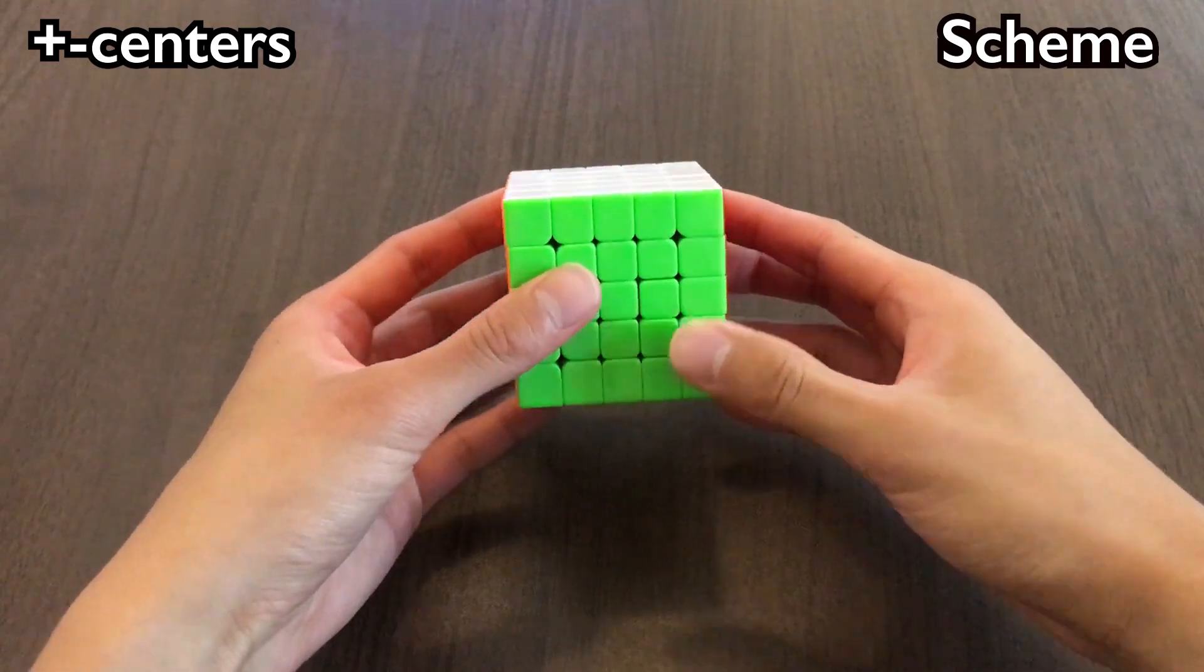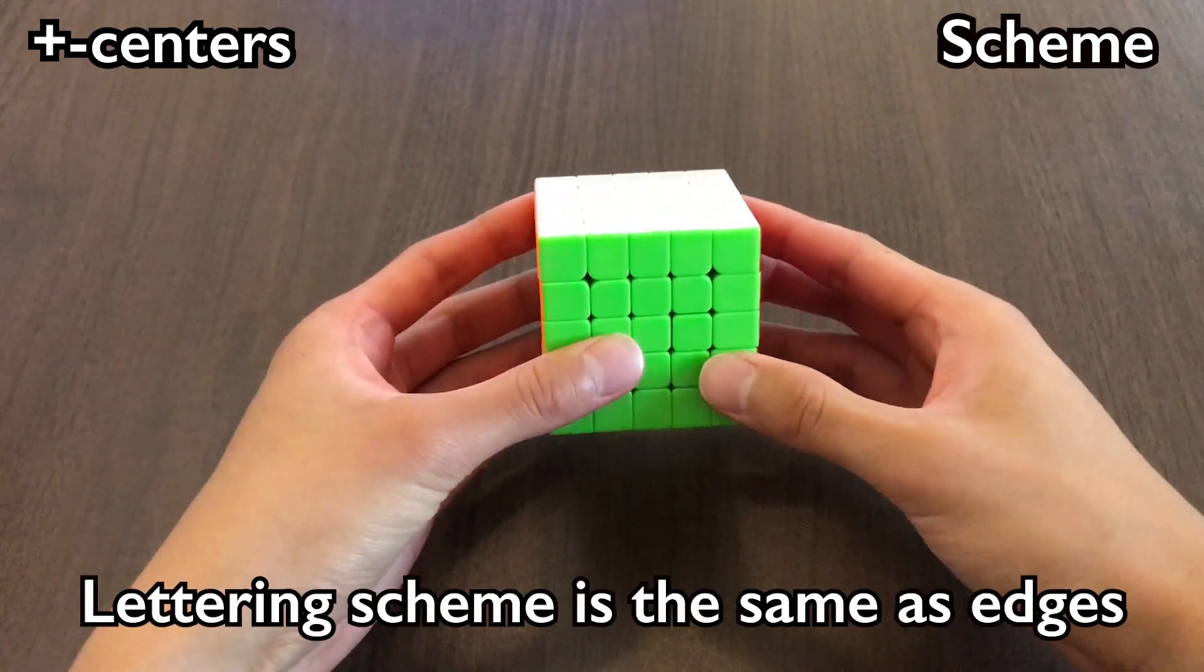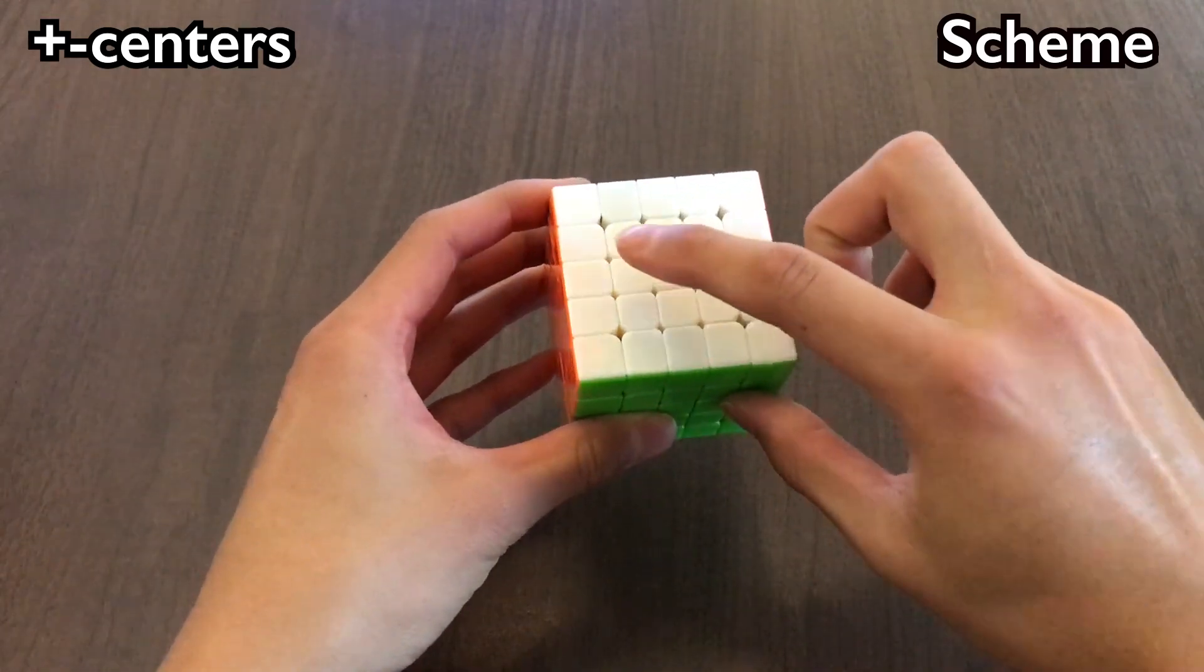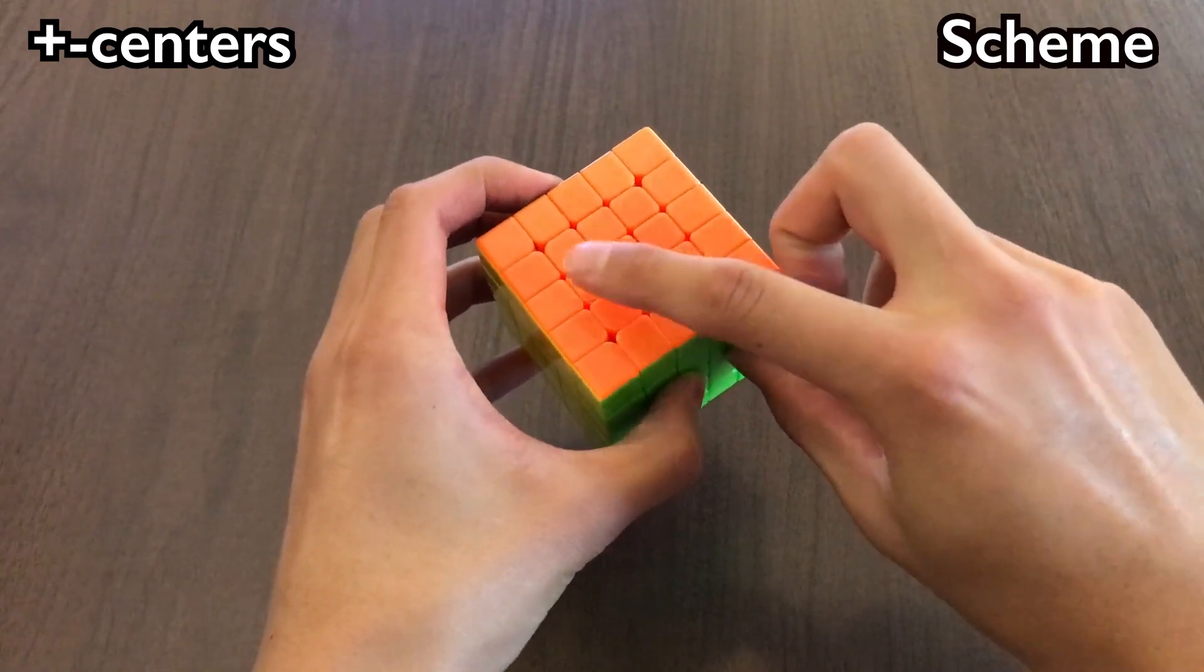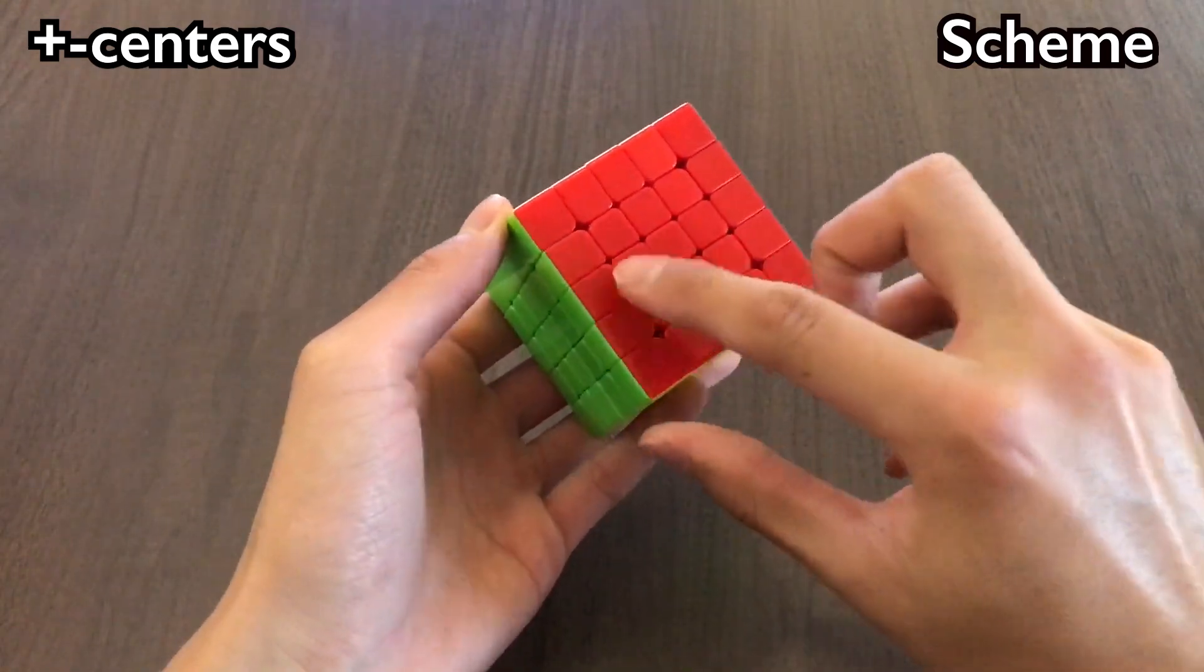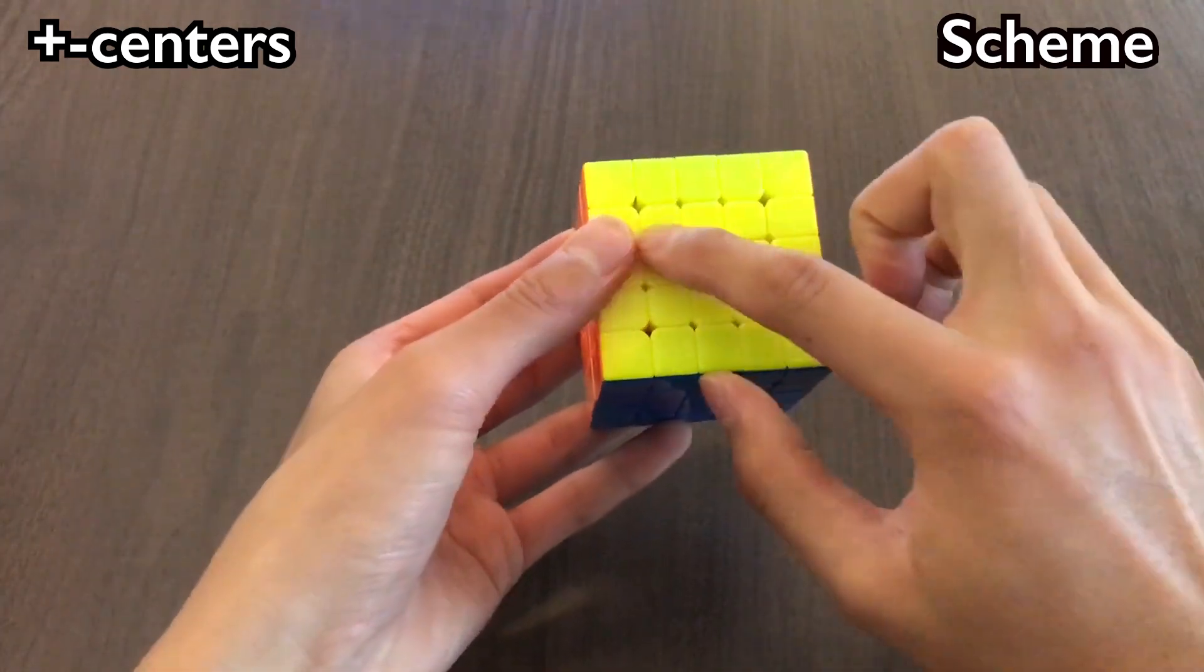Now for plus centers. The first thing we need is a lettering scheme, and we can use the exact same scheme as for edges. In SPEFS, that would be A, B, C, D, E, F, G, H, I, J, K, L, M, N, O, P, Q, R, S, T, U, V, W, X.